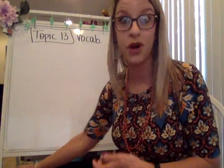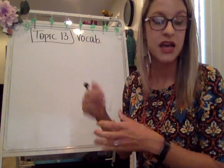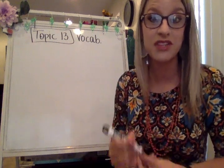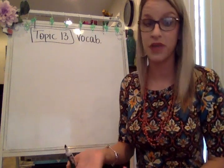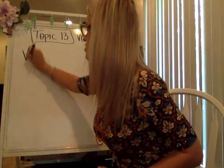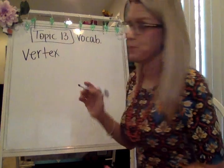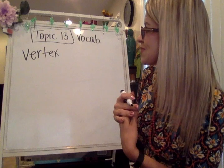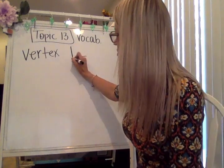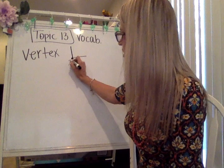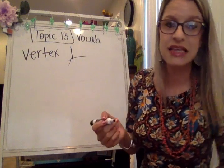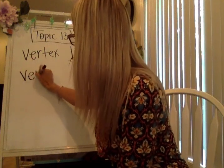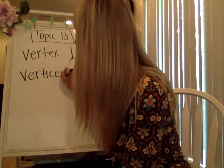I want to start with the two-dimensional or plane shapes first. There are going to be different attributes you're going to have to be looking for with these shapes, and there's also going to be some drawing of these shapes, so you have to be familiar with the vocabulary. The first word I want to talk about is vertex. A vertex is the same as where the lines intersect. You can also see this as a plural word — the plural is V-E-R-T-I-C-E-S, vertices.